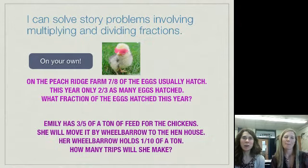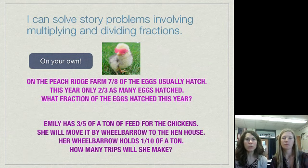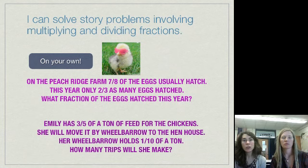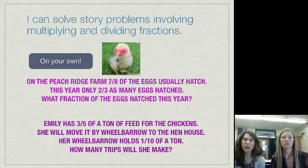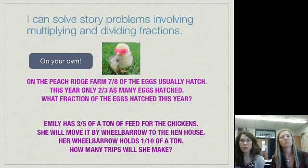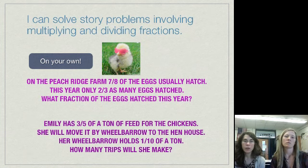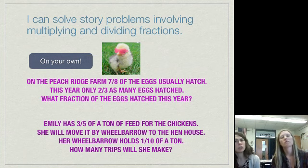Like we promised, this is a chance for you to try two on your own. On the Peach Ridge Farm, seven-eighths of the eggs usually hatch. This year, only two-thirds as many eggs hatched. What fraction of the eggs hatched this year? Think about what should we do. Think about it. Try it. And then, the second problem, and you should probably label these. Emily has three-fifths of a ton of feed for the chickens. She will move it by wheelbarrow to the hen house. Her wheelbarrow holds one-tenth of a ton. How many trips will she need to make?